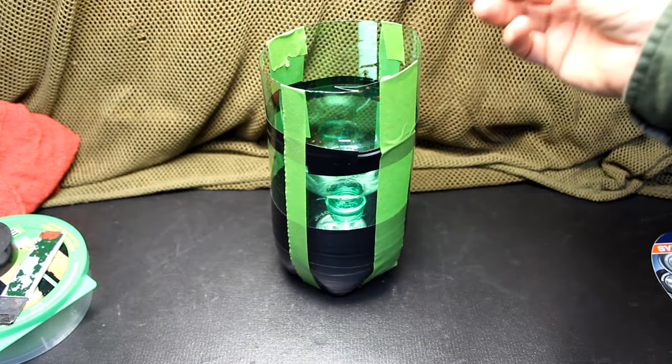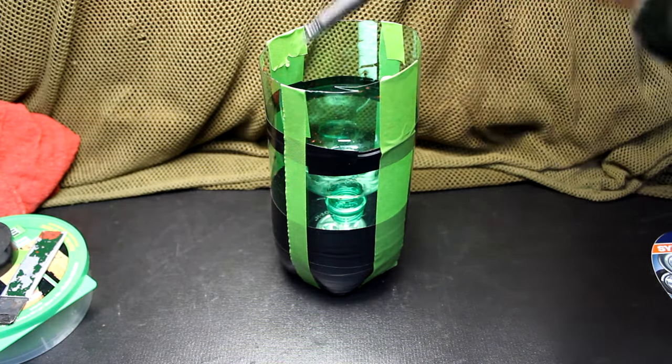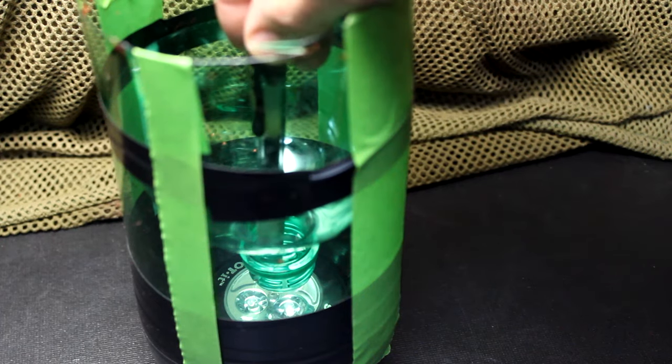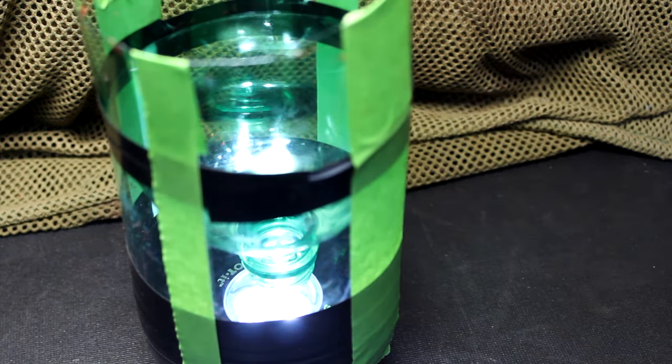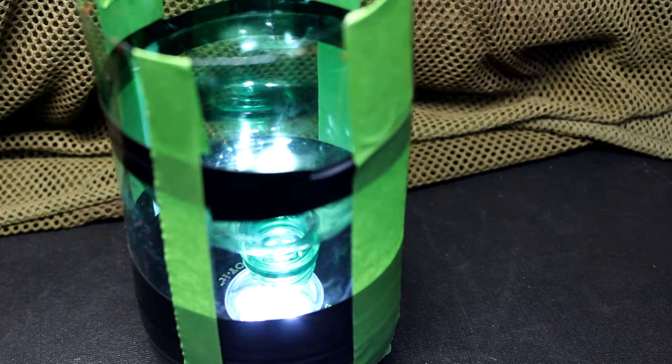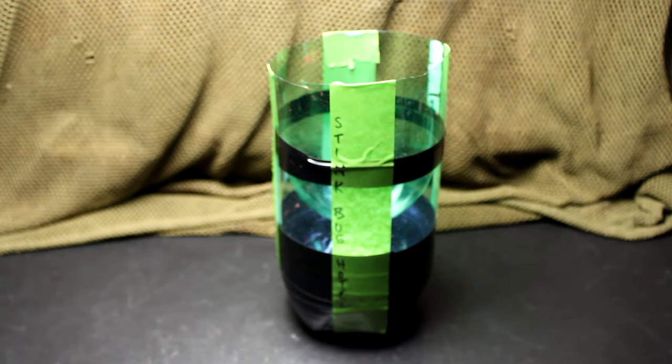Now here we have our trap complete. Just take some kind of long object. I'm taking a regular pen. I'm going to go through the top hole and just push down. Now I have the light on. Here we have it ready to go. Unplug the light. Now we're ready for stink bugs.